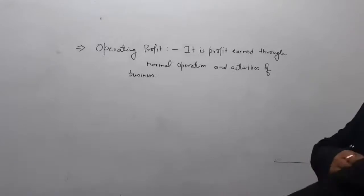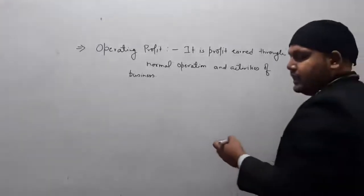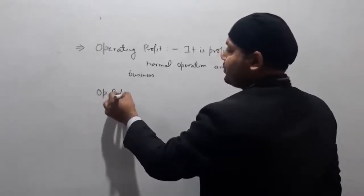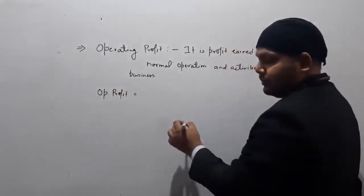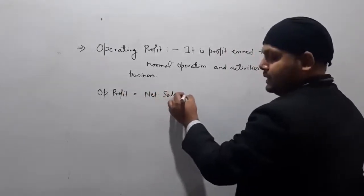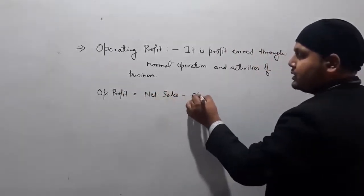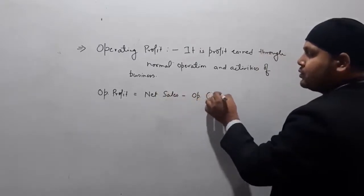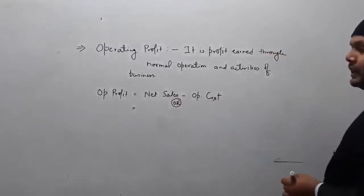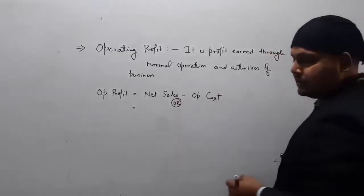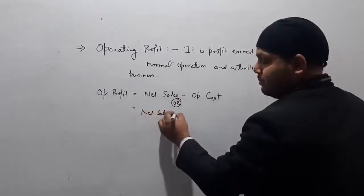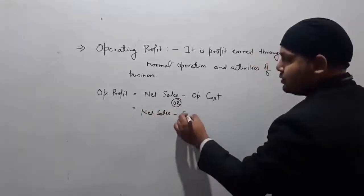The formula to calculate operating profit is: Operating Profit = Net Sales − Operating Cost. This can be further broken down as: Operating Profit = Net Sales − Cost of Goods Sold − Office and Administration Expenses − Selling and Distribution Expenses.